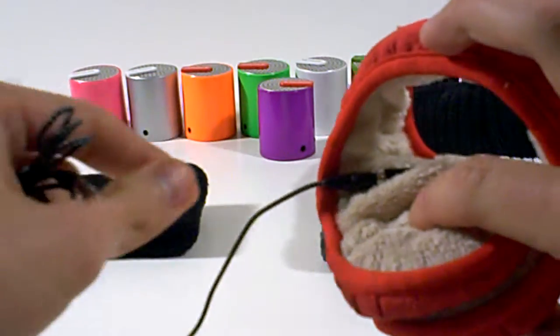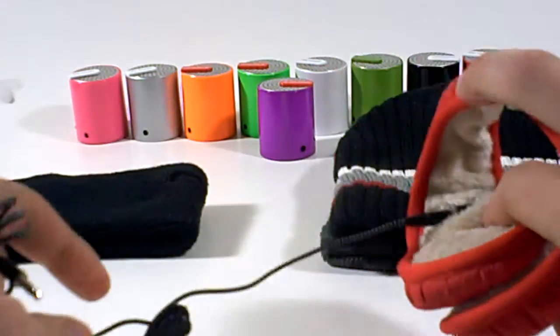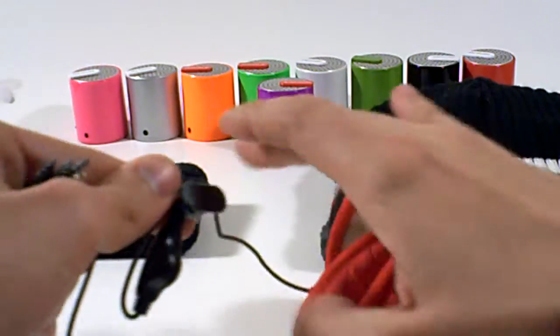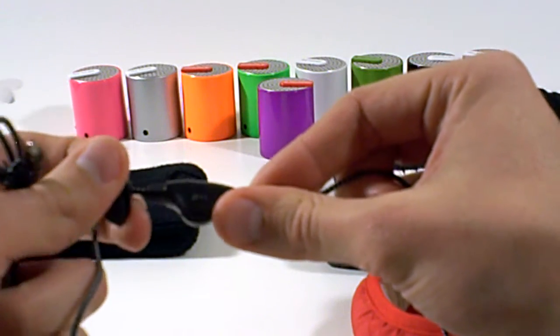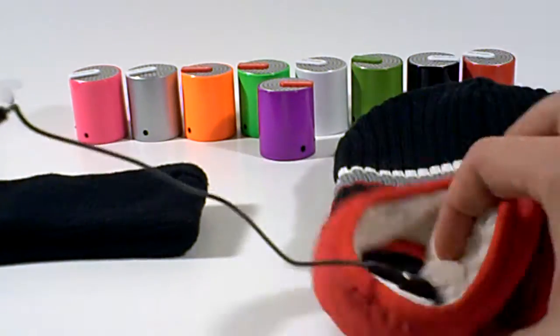There's also another cord that we have that you can have a mic on there as well. So you can actually use the phone and use this as a headset if you're out jogging and you have your songs on your phone.